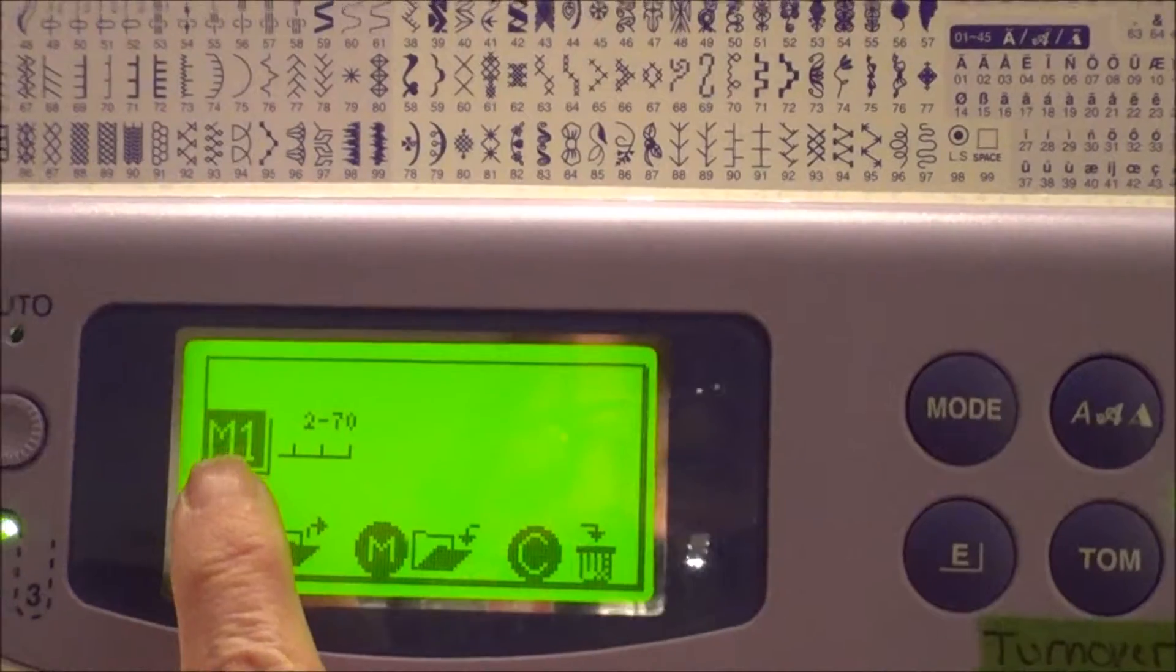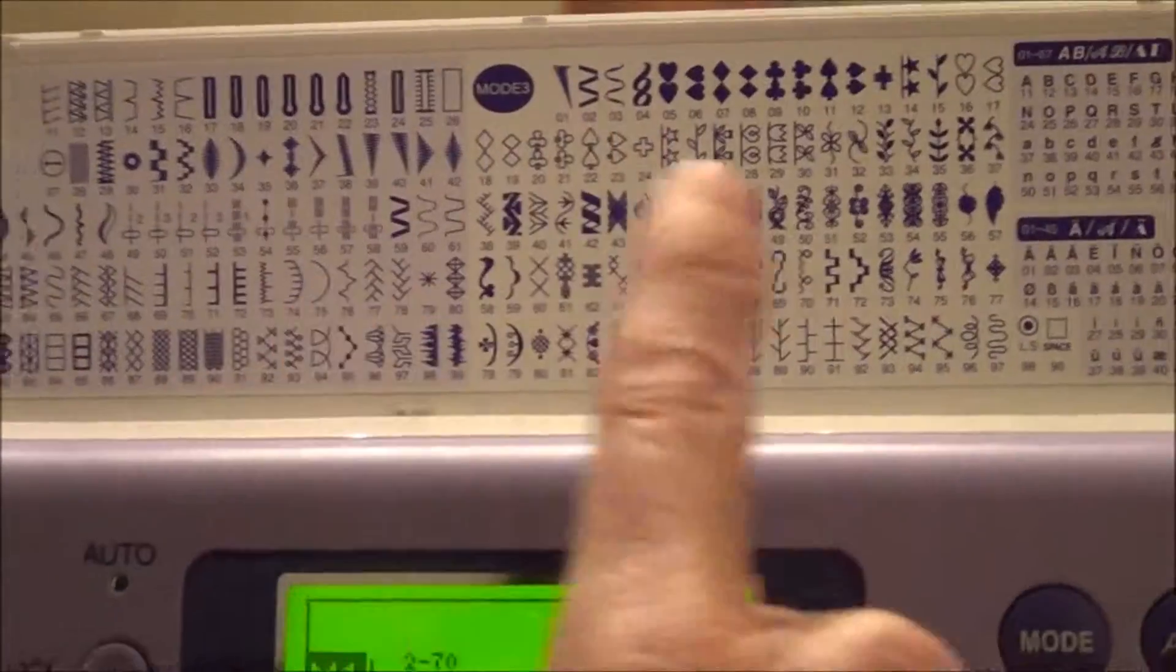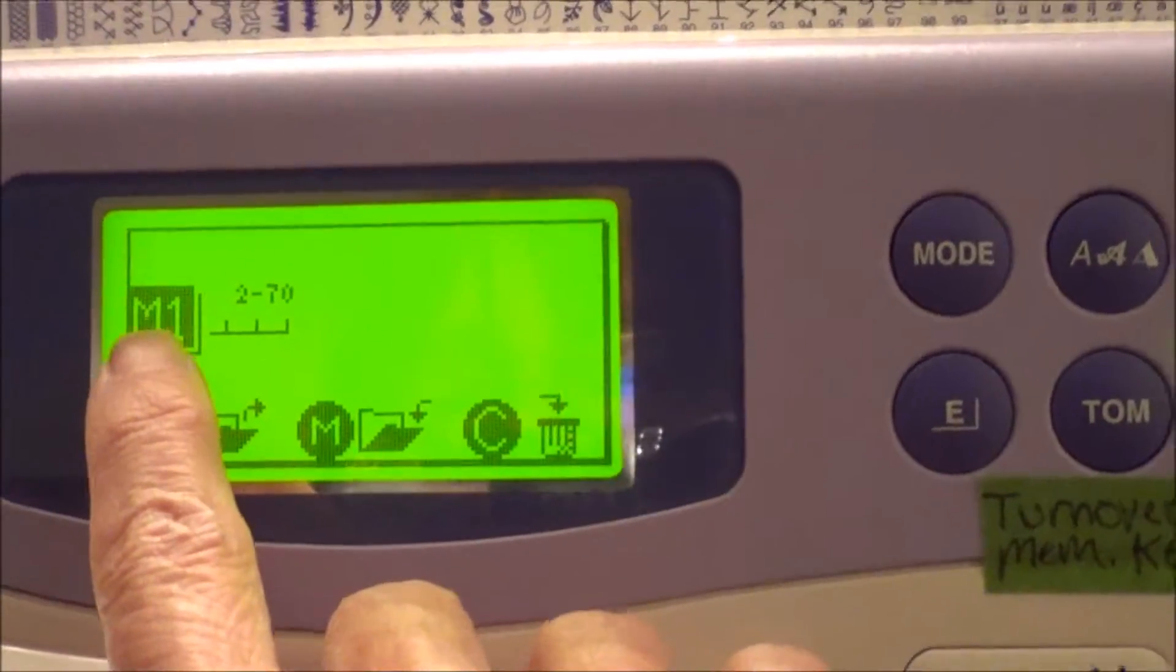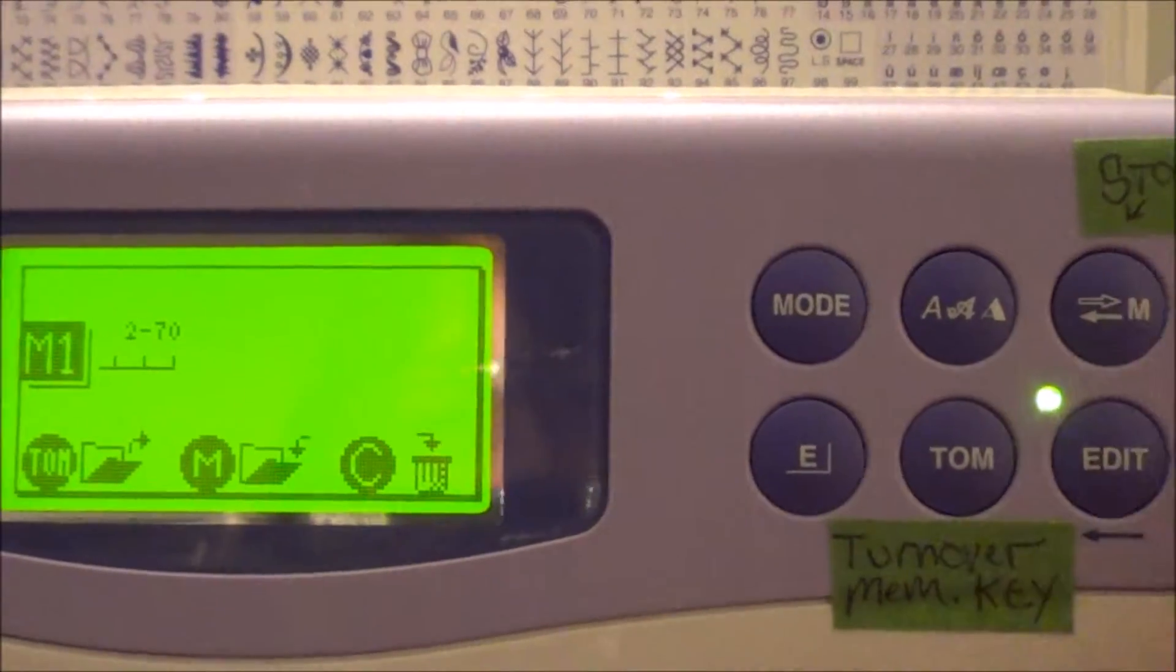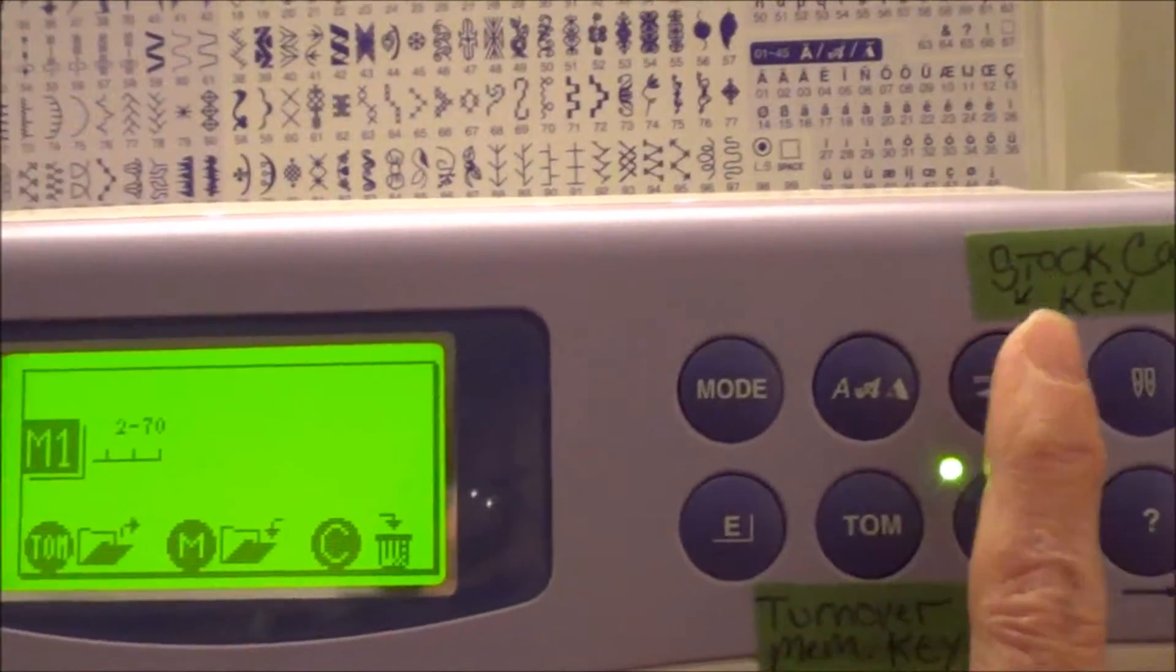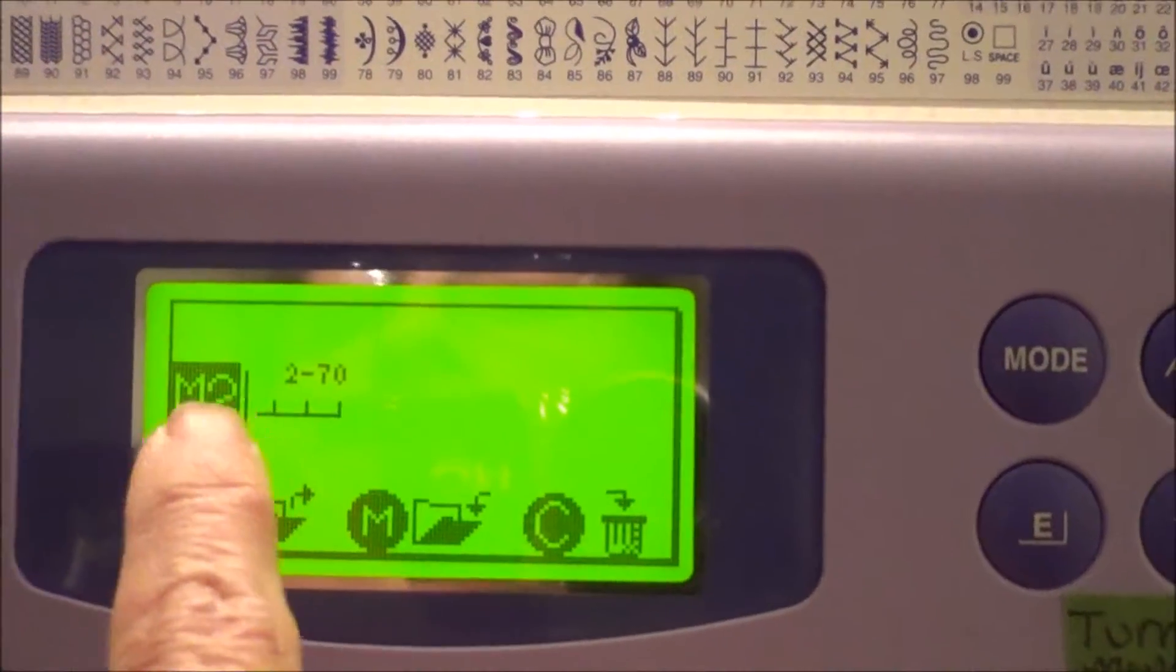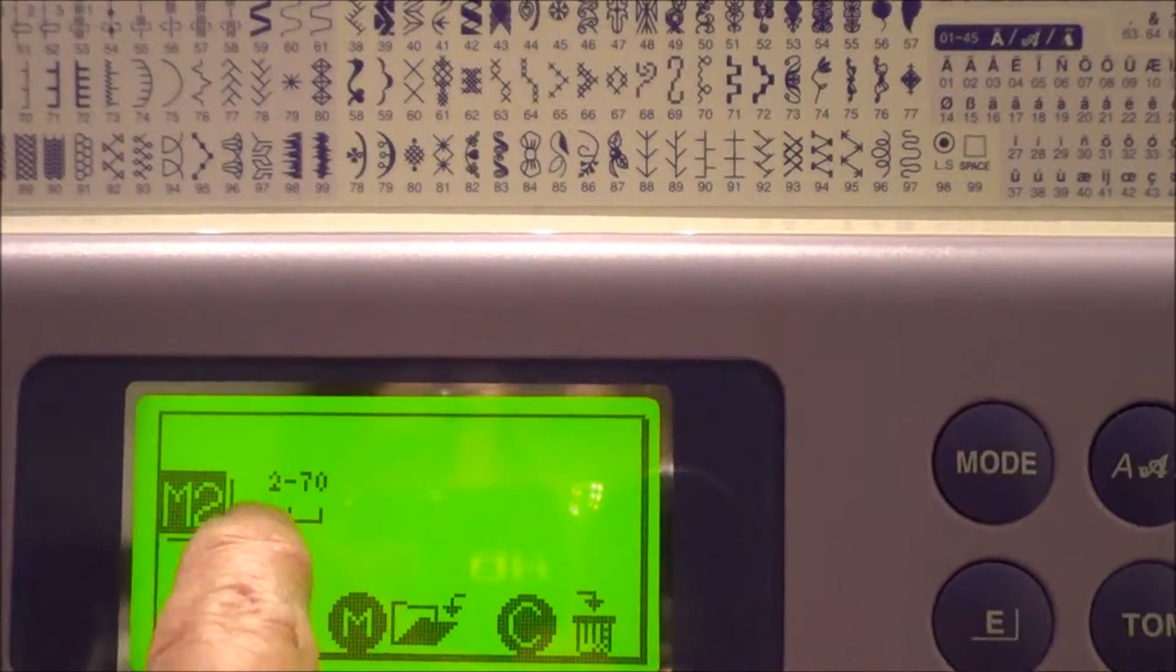Now, this M has nothing to do with modes up here, those M's. Mode 1, M1. No, it's a completely different M. It's like your memory. Okay. They could have used a different letter, but they didn't. So, there's this stock call key. If you hit that button again, it'll take you to the second memory slot, M2. Well, M2, I also have this design saved or this stitch pattern saved, but my stitch length is a little bit longer.